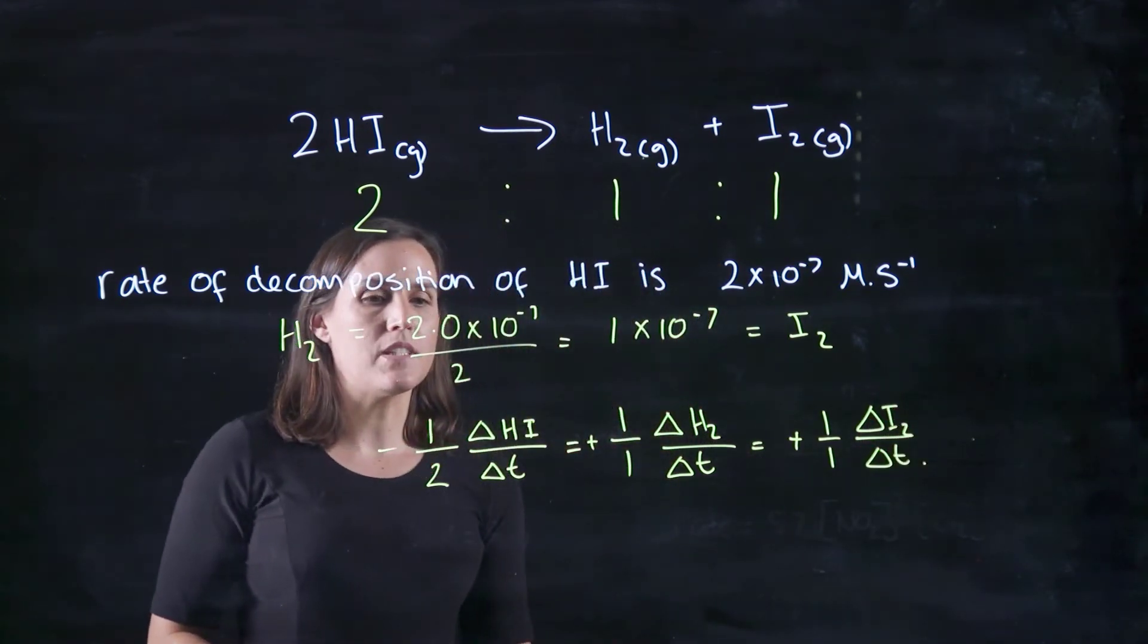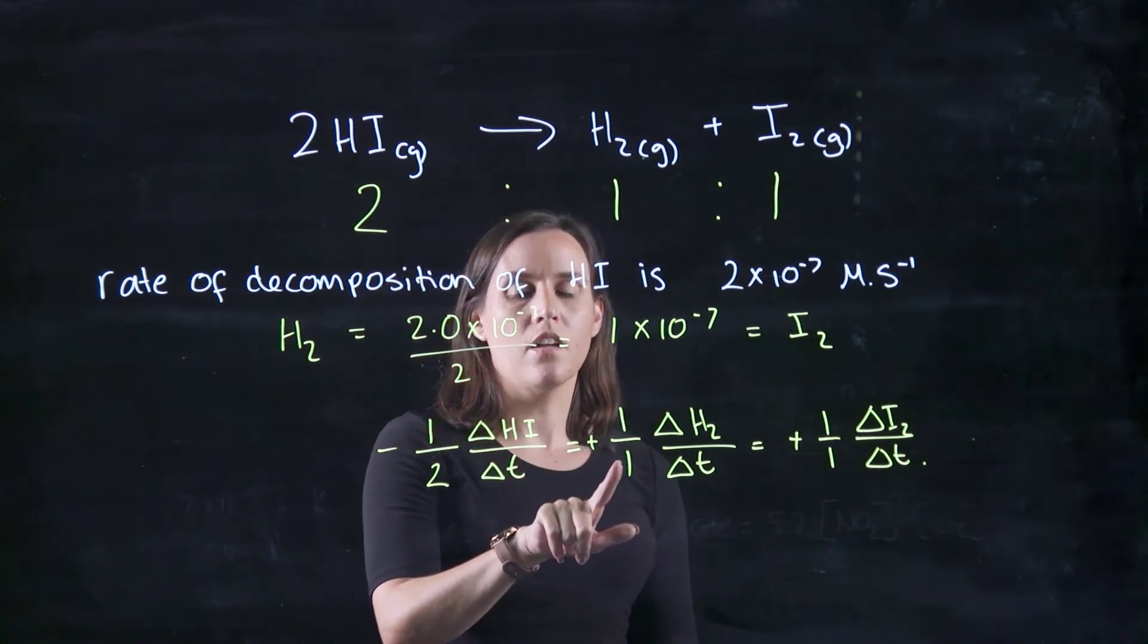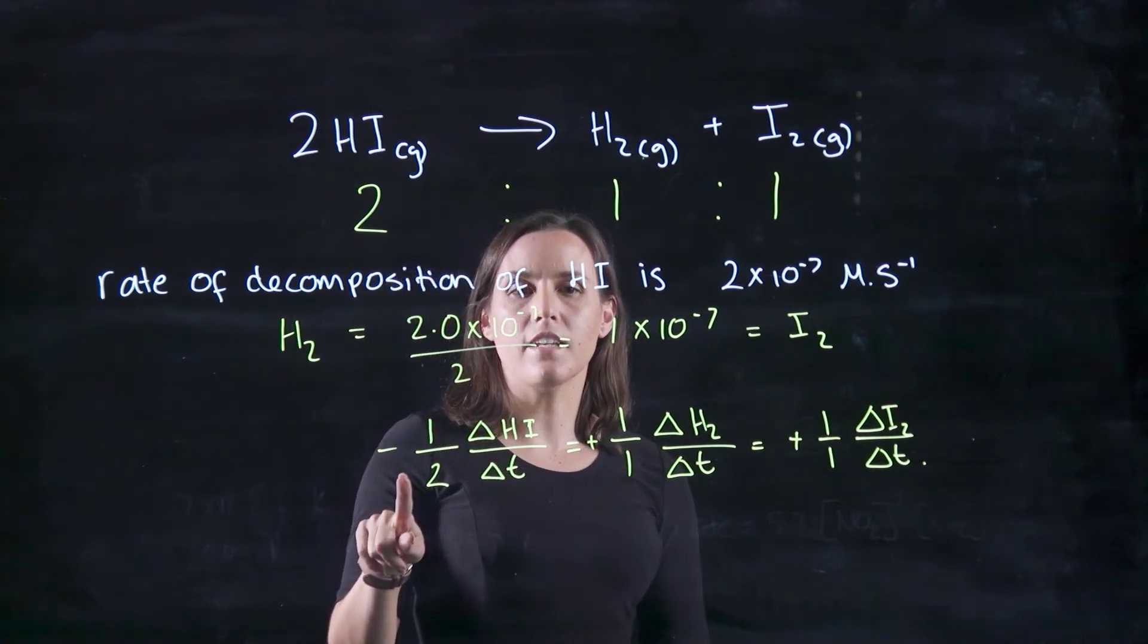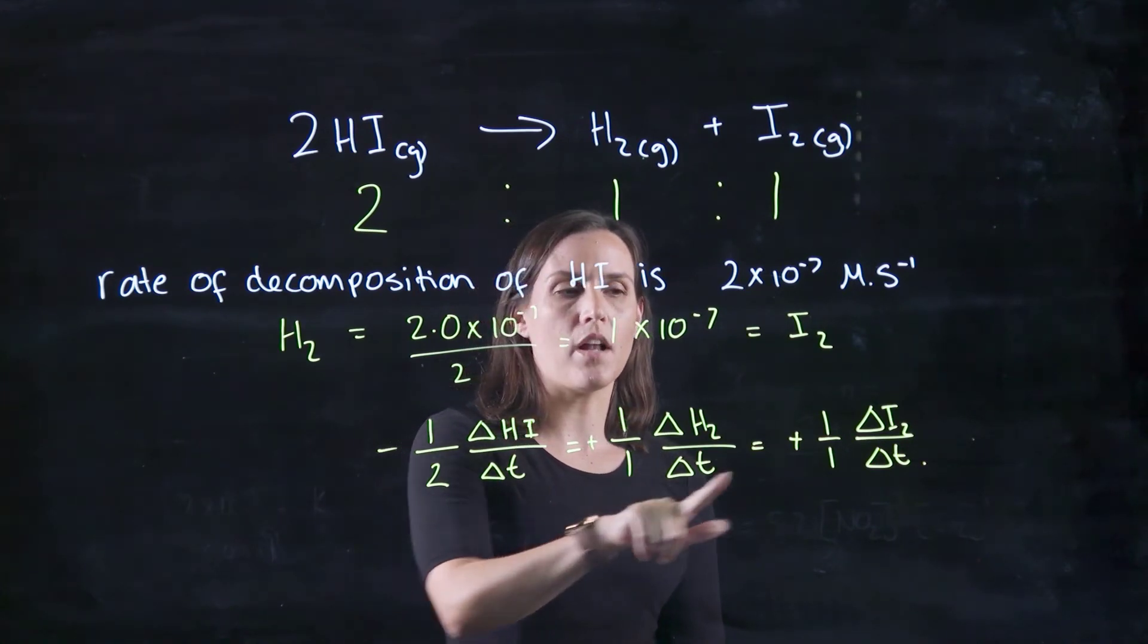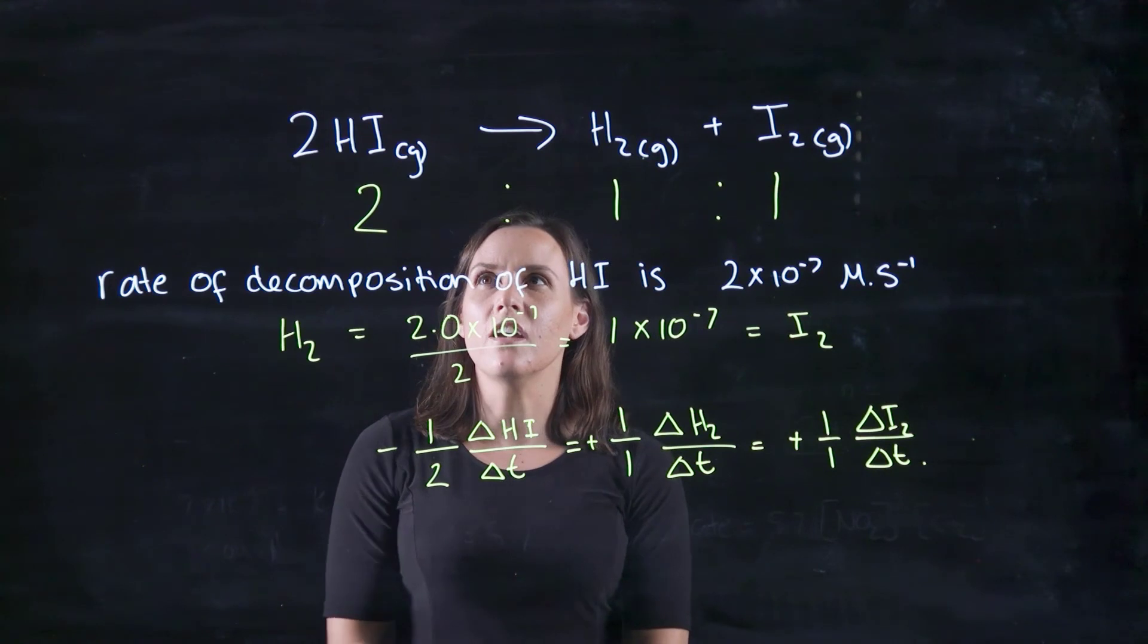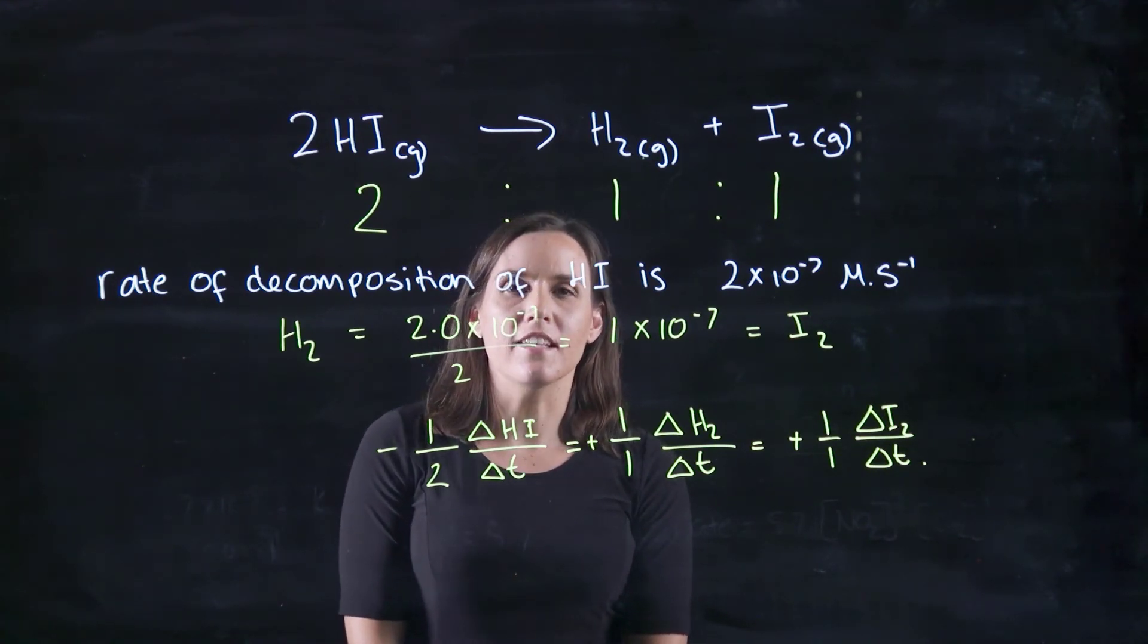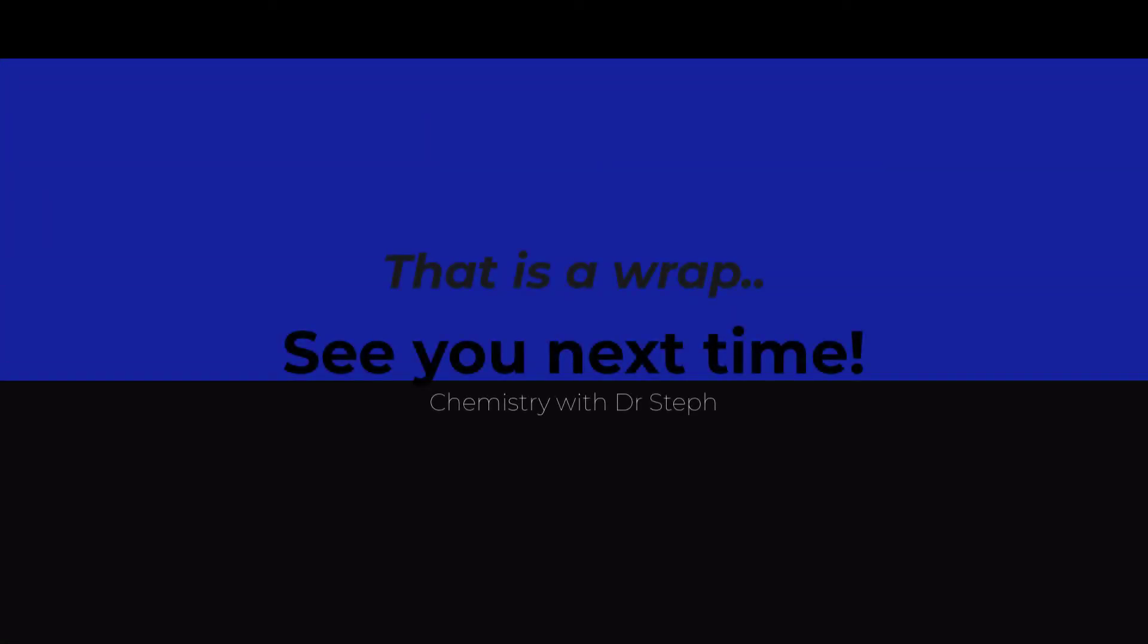Okay, so time in seconds, and so this will be negative a half, so half of that to produce 1 and 1. Okay, so thank you for watching this video, and this is how to work out decomposition and formation rates.